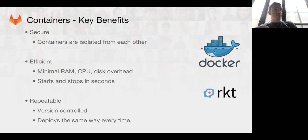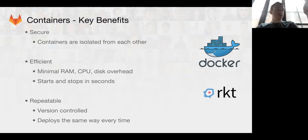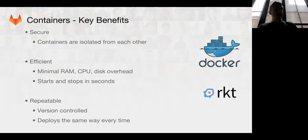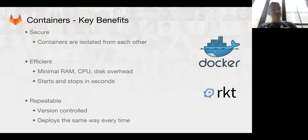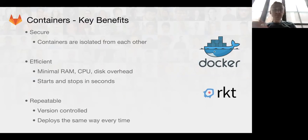For example, you can pull down a version-controlled container from the registry — the version control system for containers — and it will run the same way every time, whether it's on your laptop or running in the Google container engine. Docker is the most popular container engine. There is also one called Rocket, which is less popular but second on the container engine side. We'll talk mostly about Docker since that's primarily what people are using.